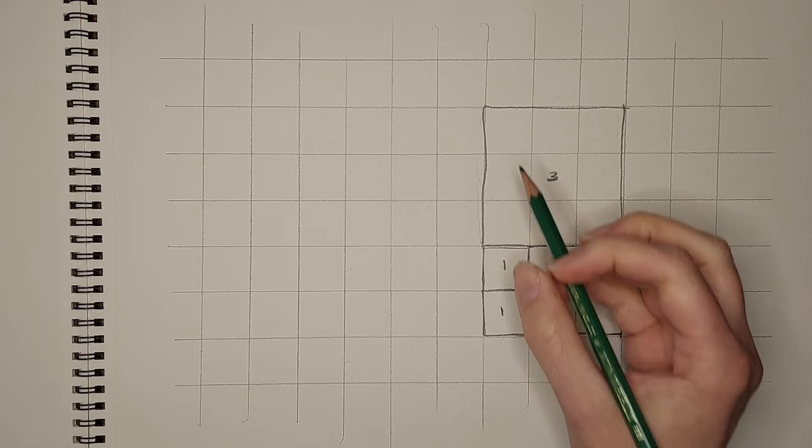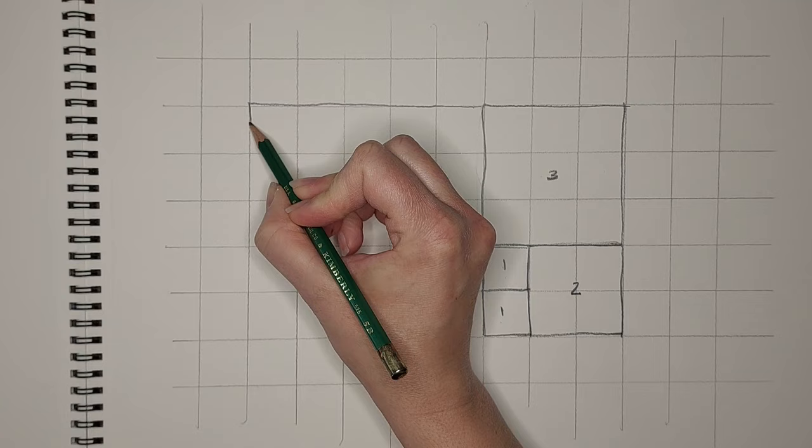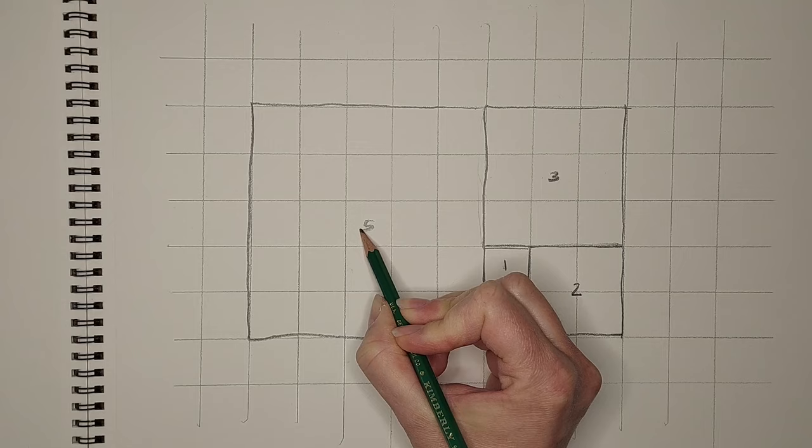So one, two, three, four, five. Down by five. Over by five. We now have a five square.